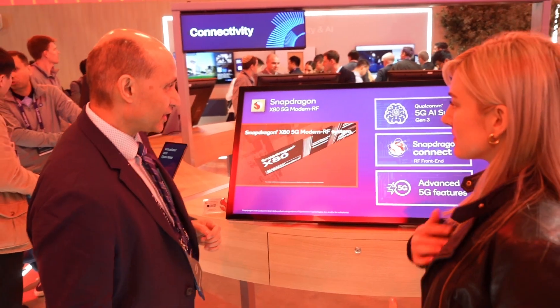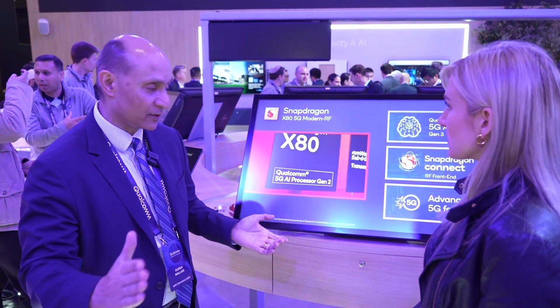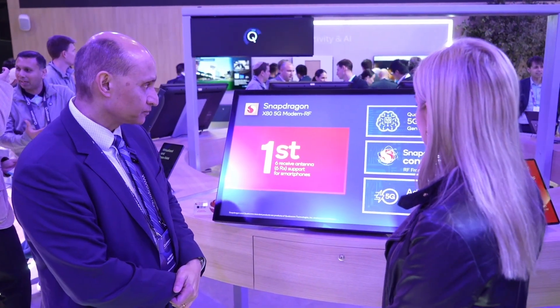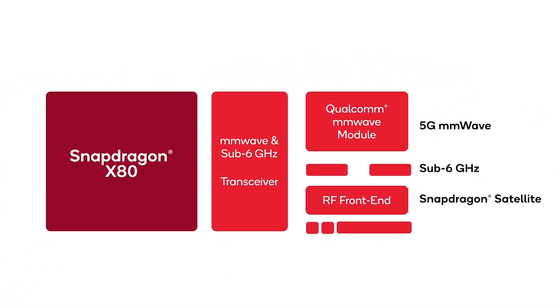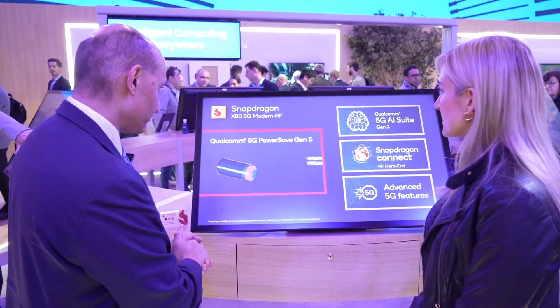The X80 5G modem RF platform is the latest in a series of modem RF platforms we've had. It has a ton of features. From a connectivity standpoint, we have 5G Advanced features — it's state-of-the-art in how many different carriers you can aggregate. It also has integrated satellite communications capability, six receive antennas, and support for multiple carrier aggregation, providing better coverage and better capacity for network operators.